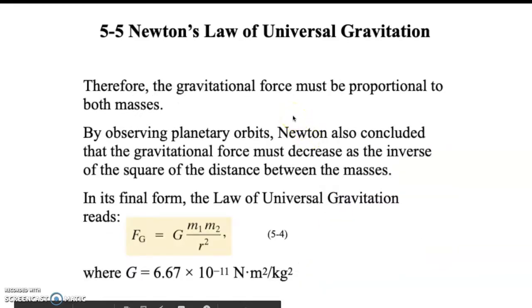So gravitational force must be proportional to masses. So by looking at orbits, Newton also concluded that the gravitational force must decrease as the distance decreases. And in fact, it turned out to be a square or inverse square of the distance between the masses. You can read about this stuff online if you'd like. But in its final form, this is the law. And this is the equation.